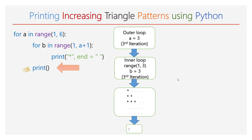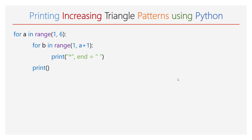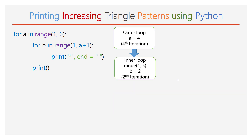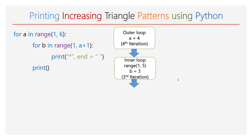Again, the execution goes to the outer for loop. Now the value of a will be 4. The range of b will be 1 to 5. During each iteration of the inner for loop, 1 star will be printed. Hence, there will be 4 iterations, and 4 stars will be printed in the output.